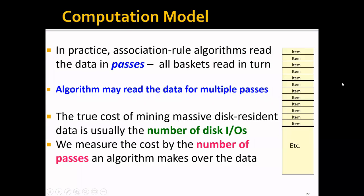As a recap on the computational model, note that in practice, association rule algorithms read the data in passes, so all baskets are read in turn. We will first read the first basket, and second, and third, et cetera. And the algorithm may read the data for multiple passes.